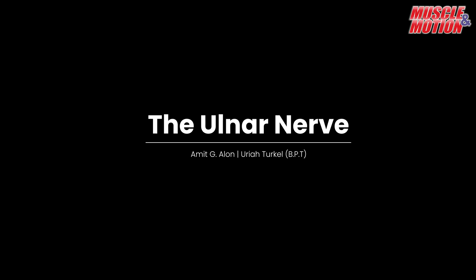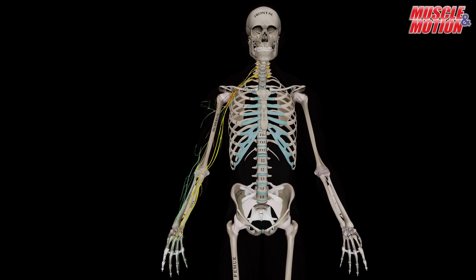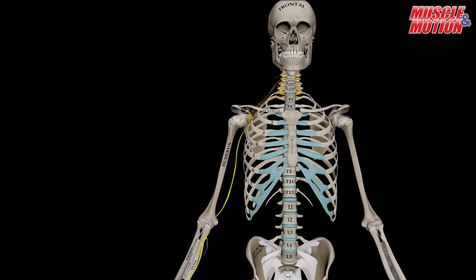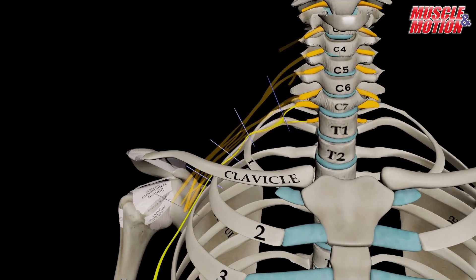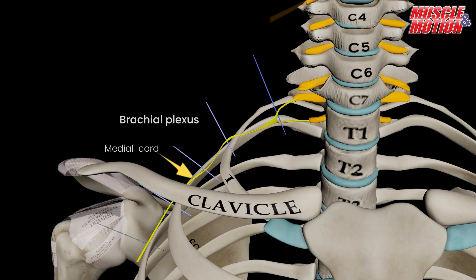The ulnar nerve originates from the medial cord of the brachial plexus, with root contributions from C8 and T1.